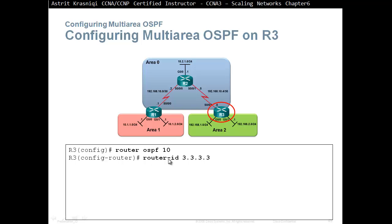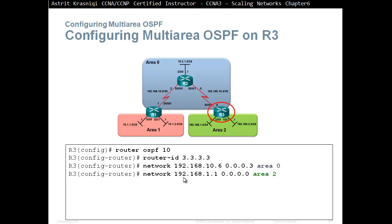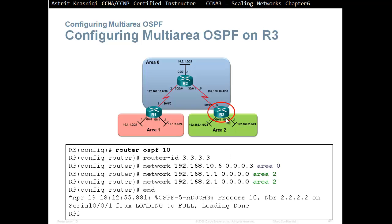Router 3: OSPF process 10, router ID. Then 'network 192.168.10.6 0.0.0.3 area 0' — even though the wildcard goes to .6, since 6 falls in that range that's going to be okay. Then 'network 192.168.1.1 0.0.0.0 area 2' — this is the most preferred method — and 'network 192.168.2.1 0.0.0.0 area 2'. Right away Router 3 will have a neighbor relationship with Router 2.